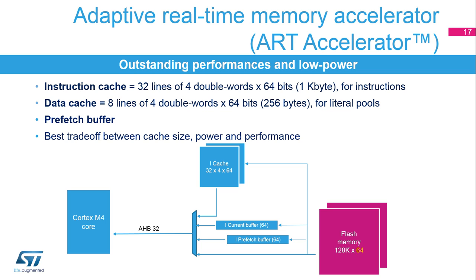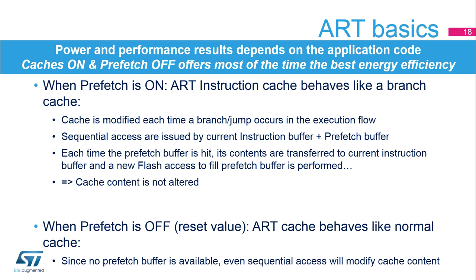If prefetch is enabled, another 64-bit flash access is performed to fill the prefetch buffer with sequential data. When the data is present in the current buffer, the CPU reads the current buffer. The next sequential read is performed in the prefetch buffer, which is copied into the current buffer so that it is free to be filled with the next sequential data. If the data is not present in the current buffer, it is read from the prefetch buffer if present; if not, it is read from the instruction cache if there is a cache hit. Otherwise, a flash access is performed.